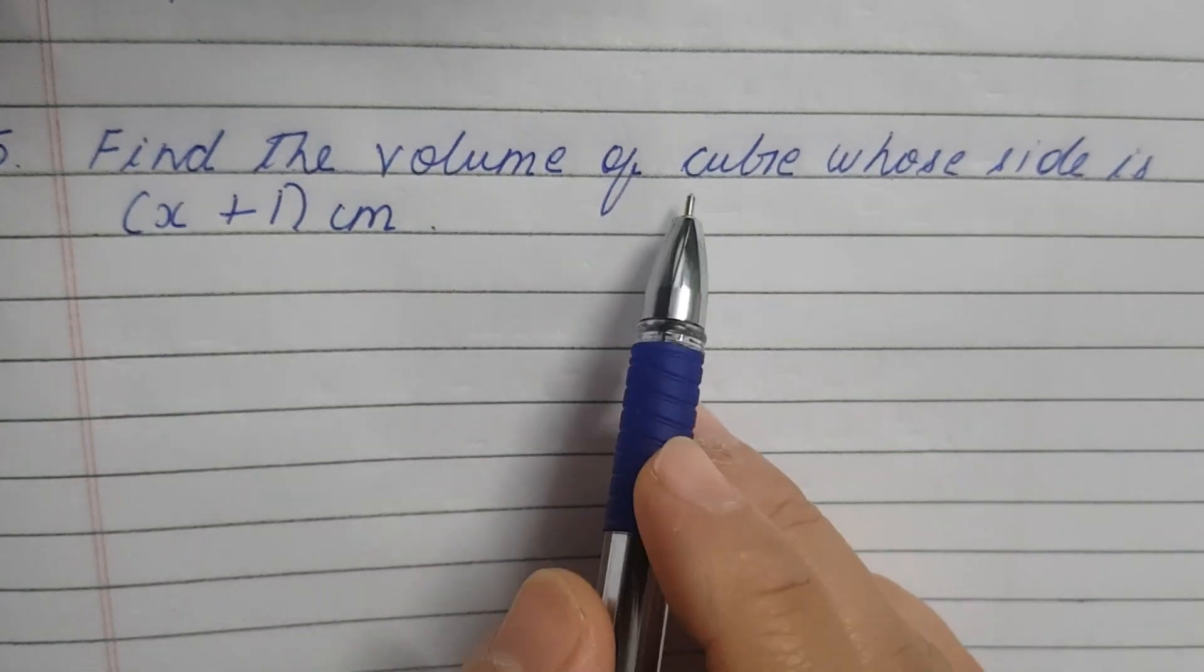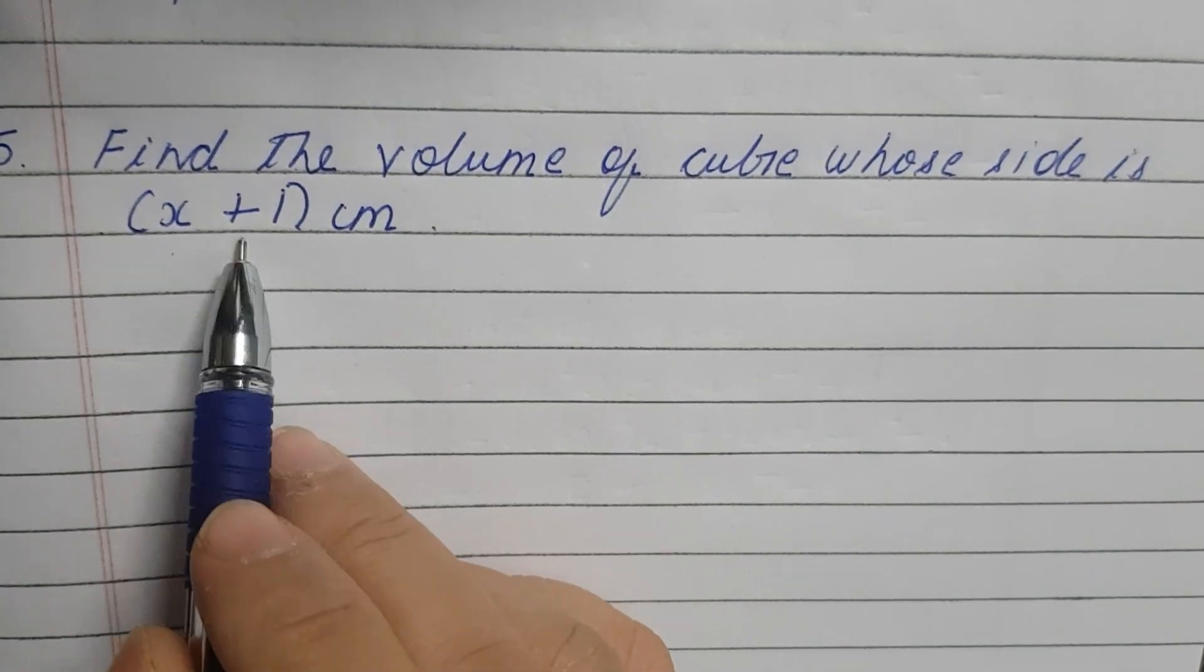Number 5. Find the volume of cube whose side is x plus 1 centimeter.